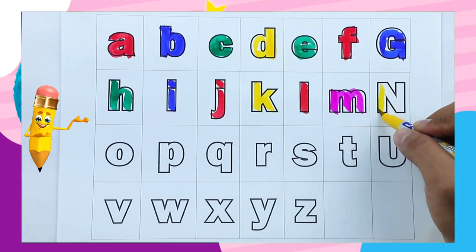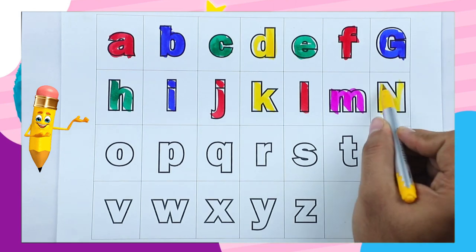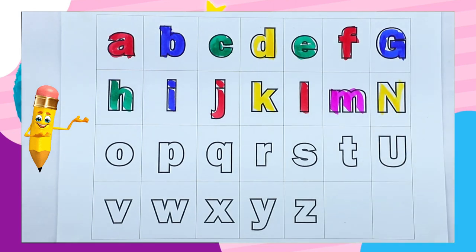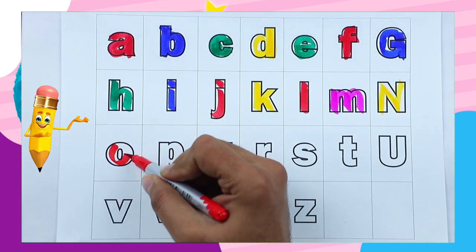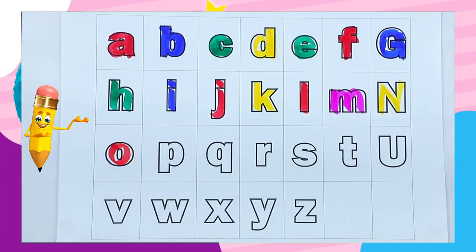Yellow color, n, n for nest. Red color, o, o for octopus.